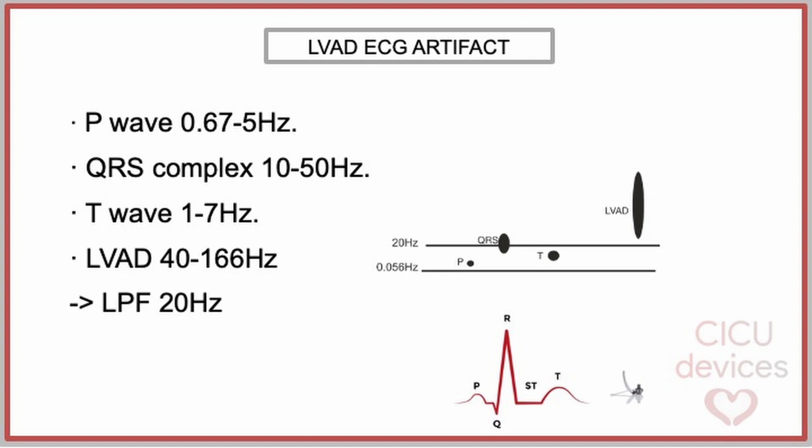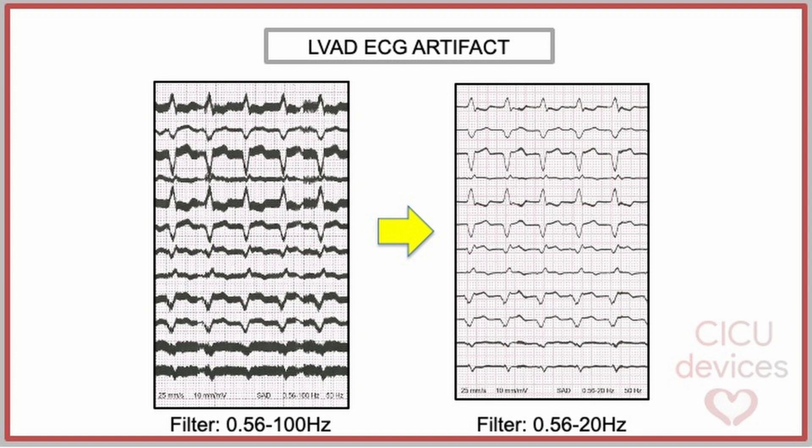If we apply a low-pass filter of 20 Hz to the ECG, we can practically eliminate or reduce the artifact generated by the LVAD. On the left side of the screen, we present an ECG recorded with a low-pass filter of 100 Hz, compared to an ECG recorded with a low-pass filter of 20 Hz on the right. A significant reduction in interference can be observed, improving the interpretation of the recording.